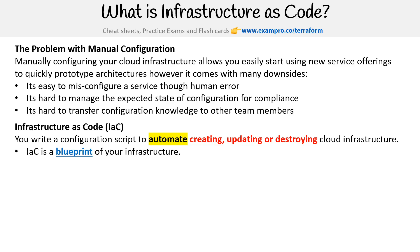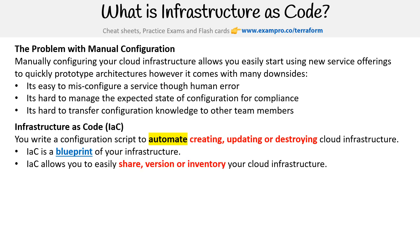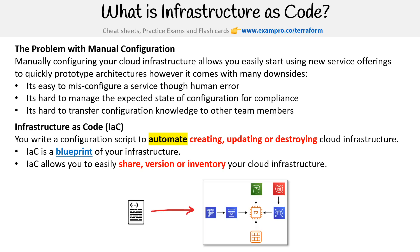IAC could also be thought of as a blueprint of your infrastructure. IAC allows you to easily share, version, or inventory your cloud infrastructure. And just to give you a visualization, imagine you write a script and that's going to provision and launch a bunch of cloud services that are all interconnected.